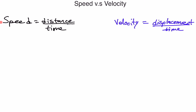Speed can never be negative — speed is always positive, and it's a scalar value. On the other hand, velocity can be positive or negative, and we call that a vector because it has a magnitude and a direction.